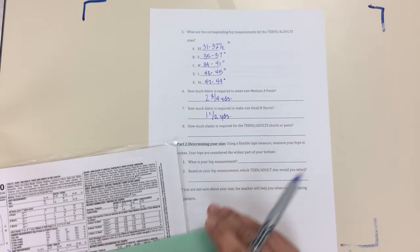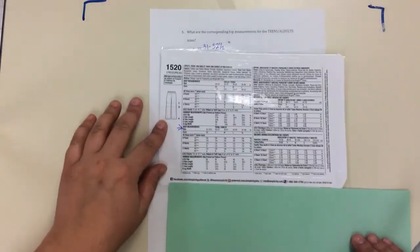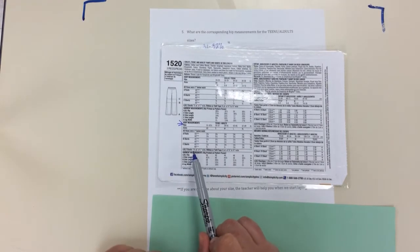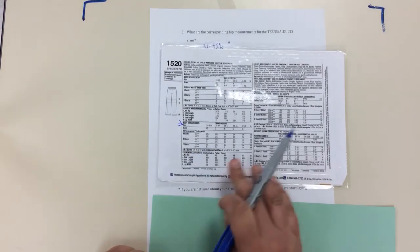The next part we're going to look at is elastic. For this pattern every size needs the same amount of elastic. So it's right here where it says ABC elastic - you need one and five eighths of a yard of one inch wide elastic.